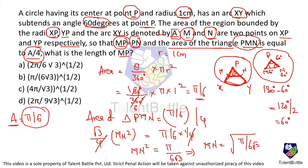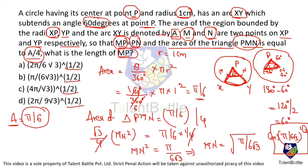Therefore MN = (π/(6√3))^(1/2). Since triangle PMN is equilateral, MP = MN = (π/(6√3))^(1/2). The length of MP is option B: (π/(6√3))^(1/2).